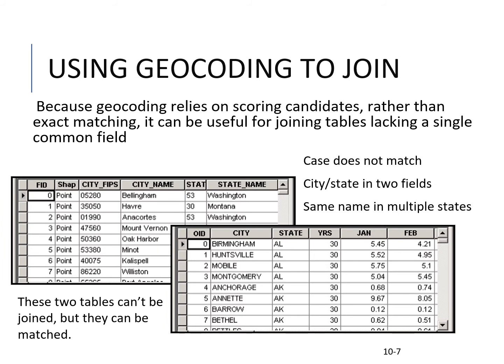Using geocoding to join is another option, because geocoding relies on scoring candidates rather than exact matching. It can be useful for joining tables lacking a single common field. These two tables can't be joined but they can be matched on the city name attribute — even if the case doesn't match, with one in lowercase and one in full capitals, it can still match.